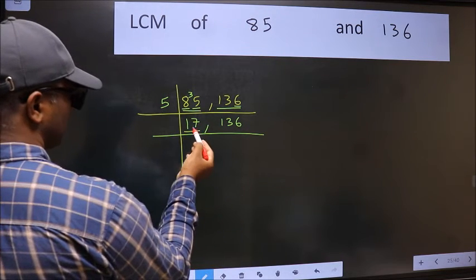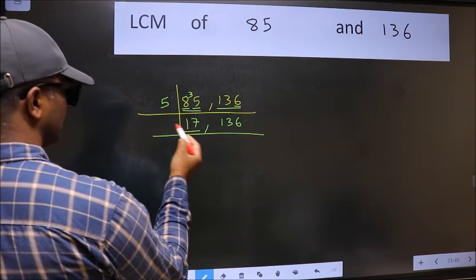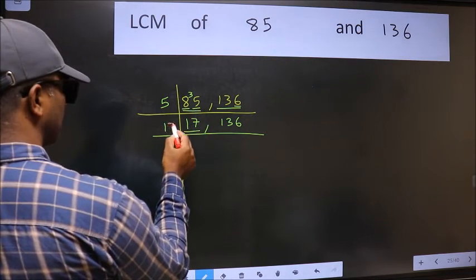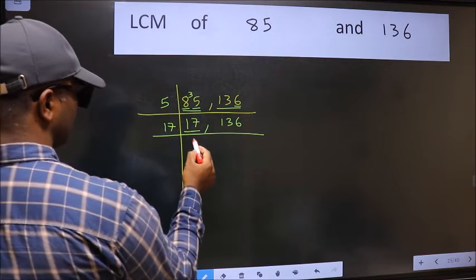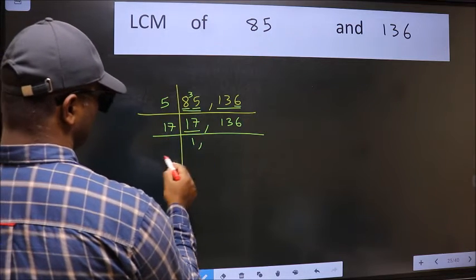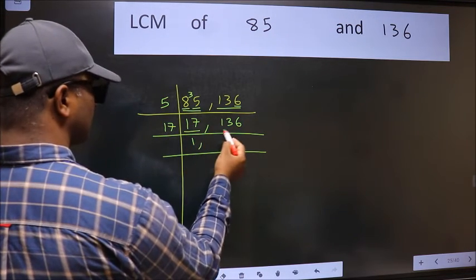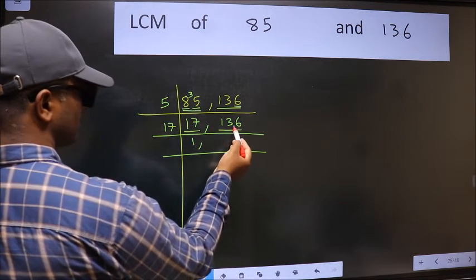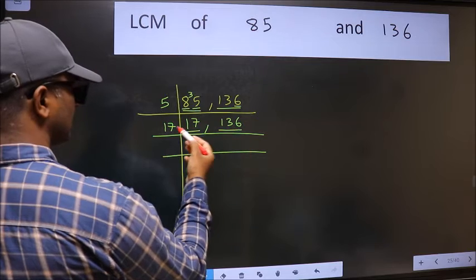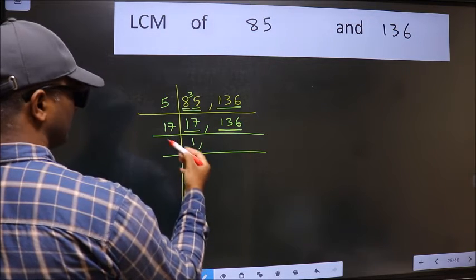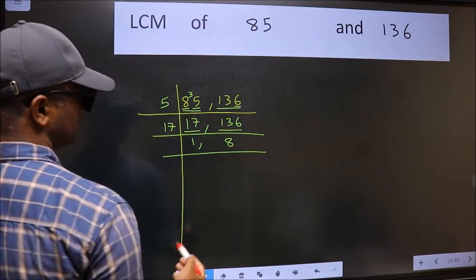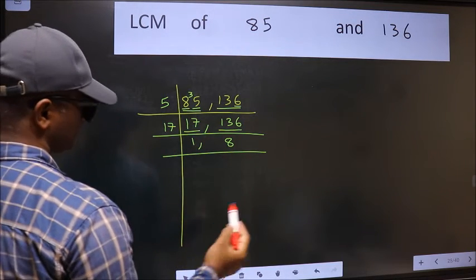Now here we have 17. 17 is a prime number, so 17 divided by 17 is 1, giving 17. The other number is 136. When do we get 136 in the 17 times table? 17 eights are 136.